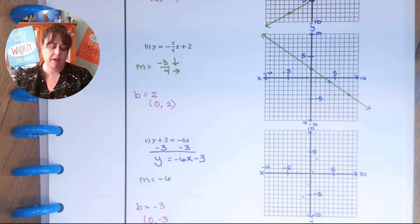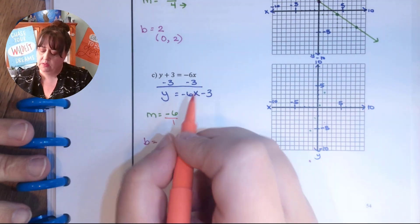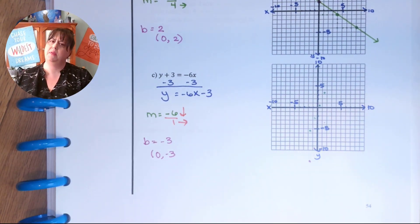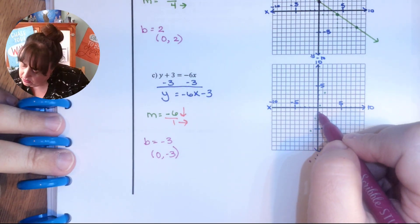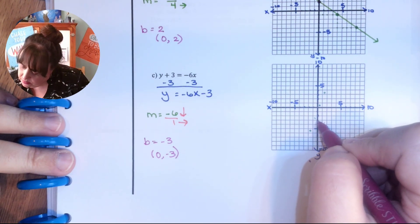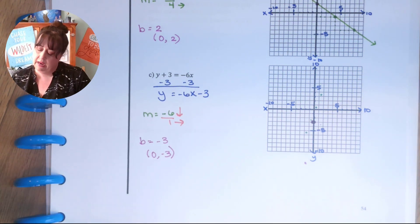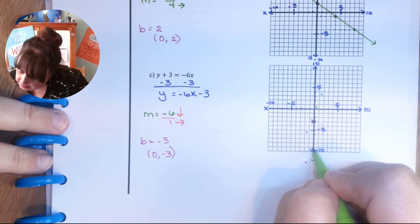Now that negative 6 might be a little confusing to some of you. That's okay. Whole numbers always sit over 1. So this is going to be down 6 and right 1. This is going to be a very, very funny looking graph. So we are going to start at negative 3. 1, 2, 3. And then we are going to go down 6 and right 1. 1, 2, 3, 4, 5, 6 and right 1.